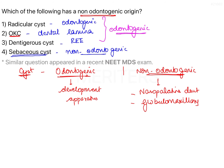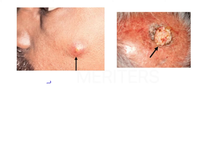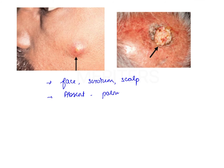The sebaceous cyst is also known as the epidermoid cyst, with frequent locations on the face, scrotum, and scalp. It is absent on palms and soles because sebaceous glands are not present there. It can occur within the oral cavity, specifically on the lips and the floor of the mouth.